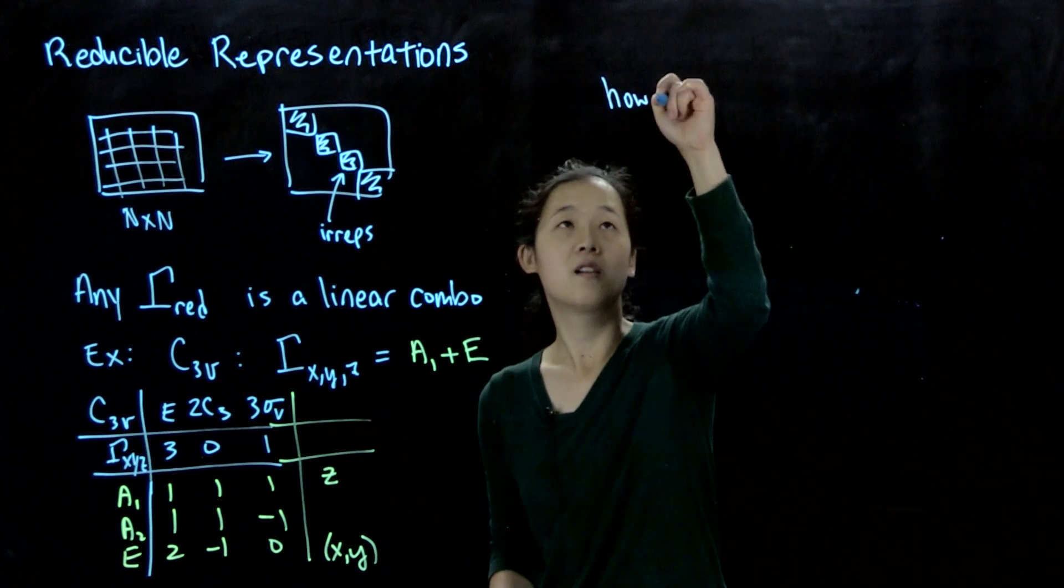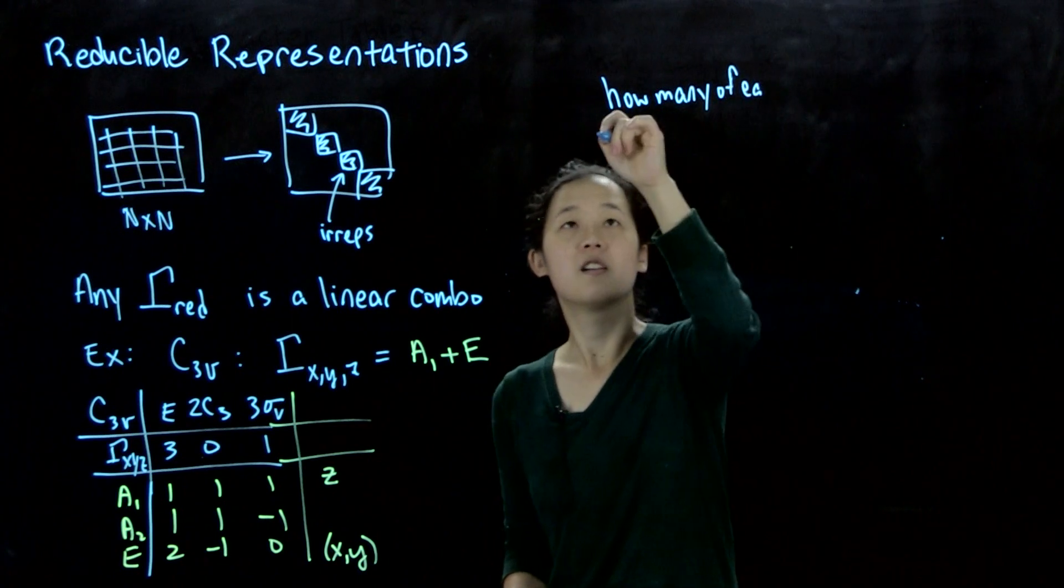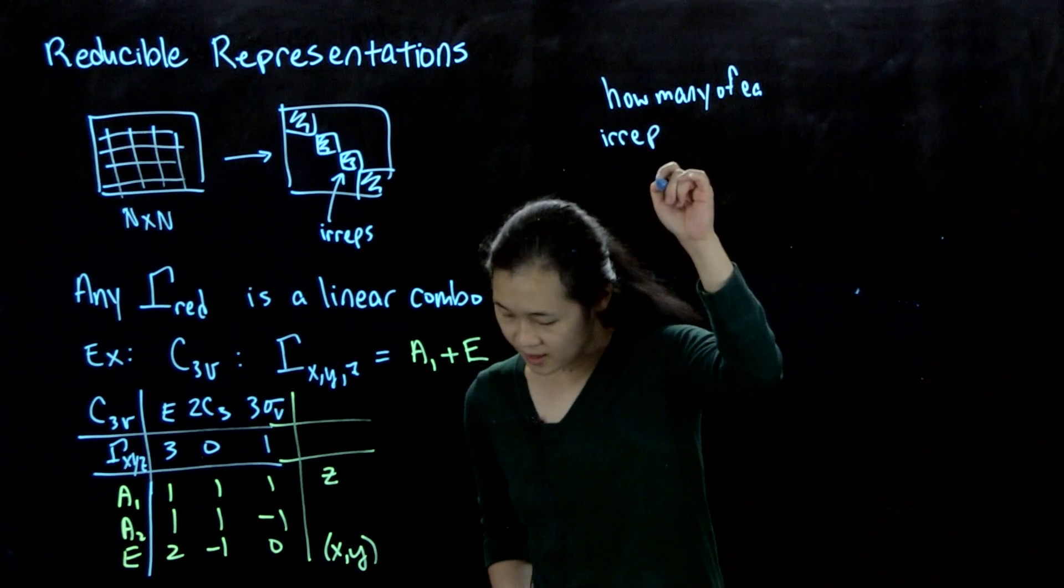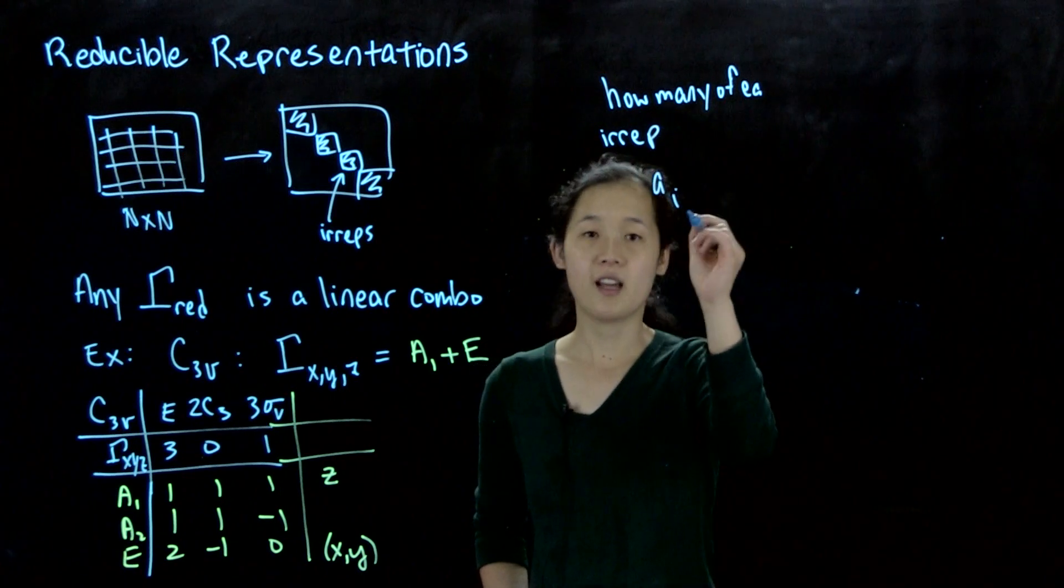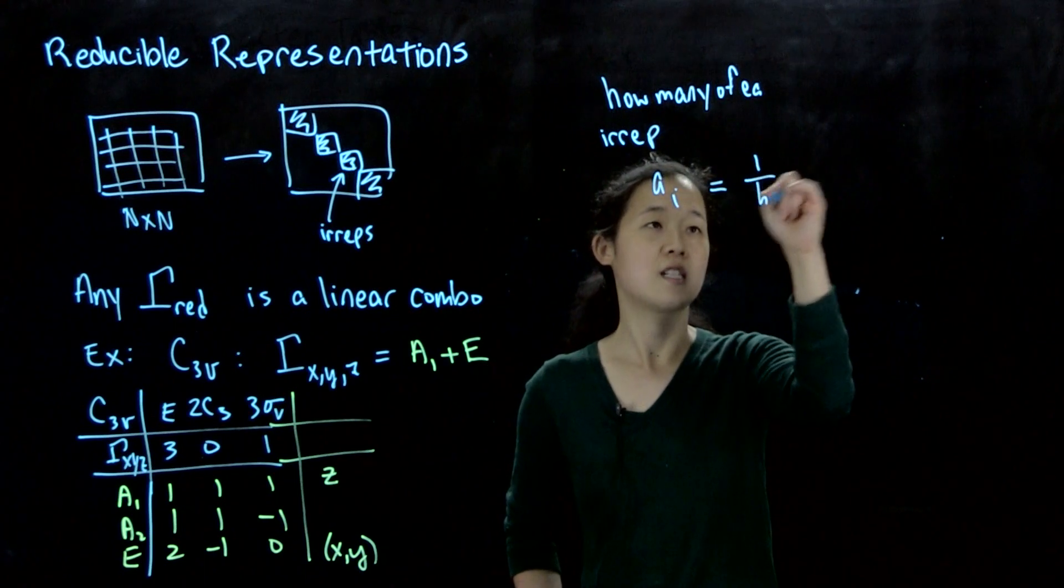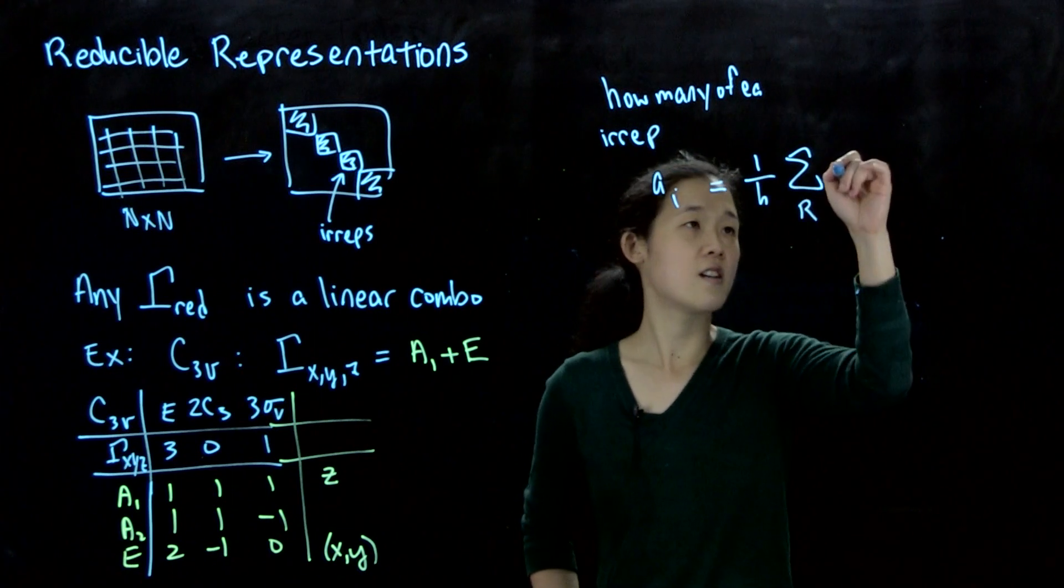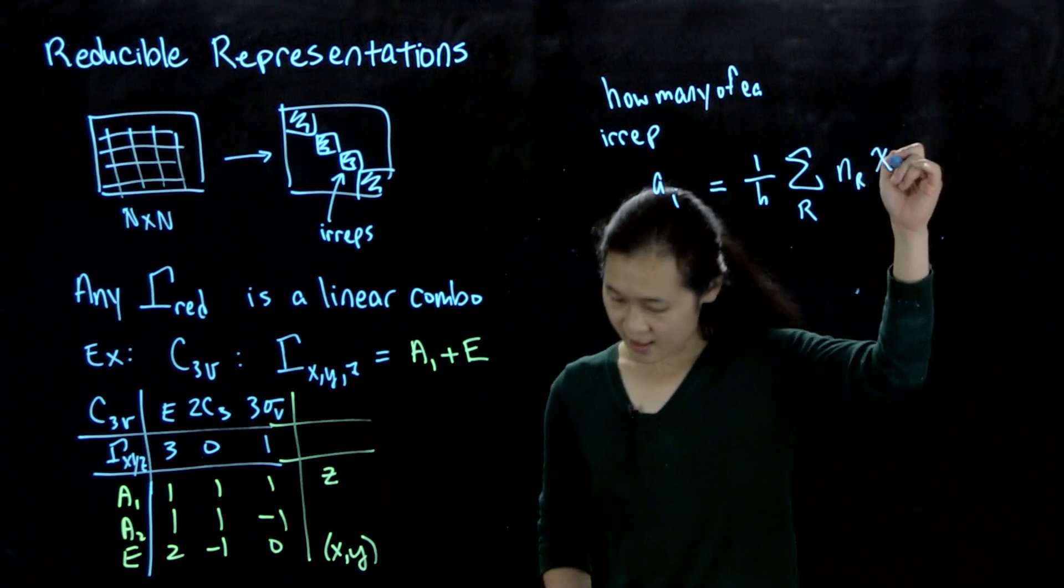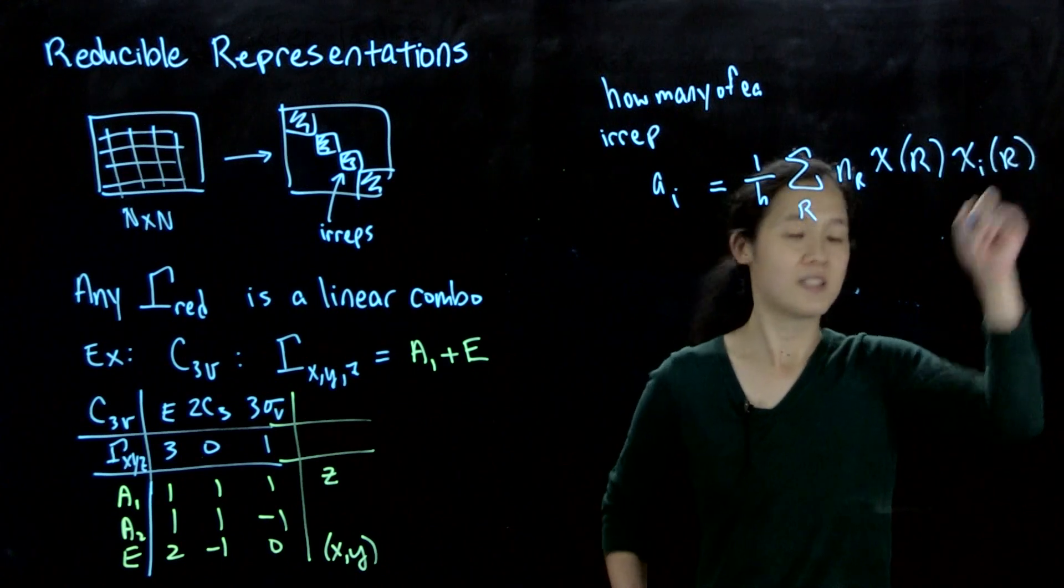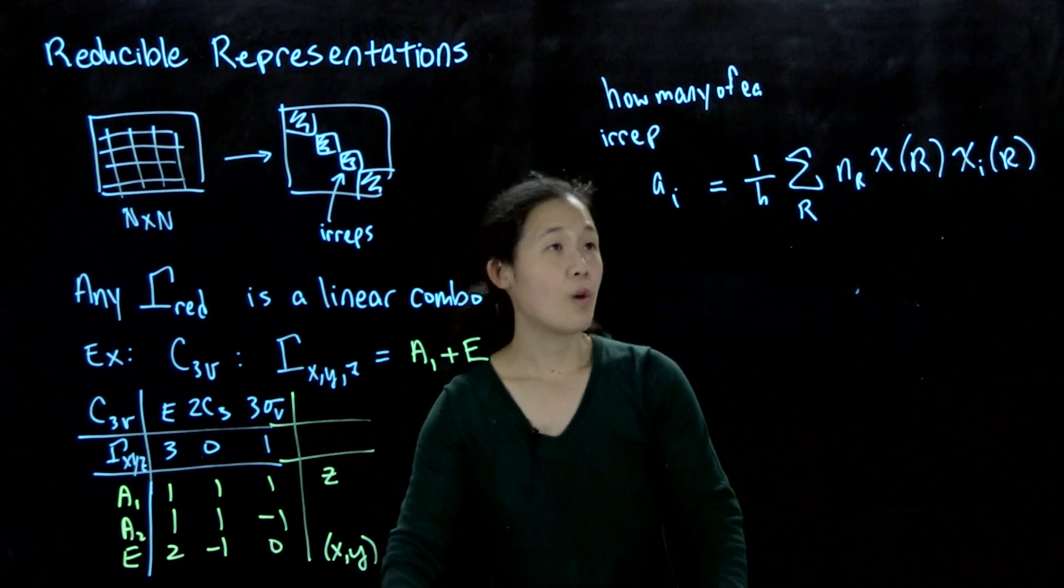The formula is, if you want to know how many of each irrep there is, let's call this a sub i. So a is the coefficient, and i is for each irrep. The formula is equals 1 over h, sum over r, n r, chi r, chi i r.